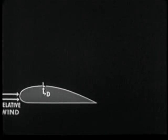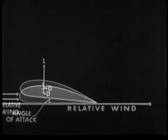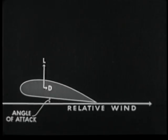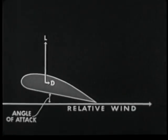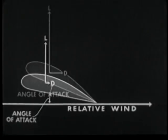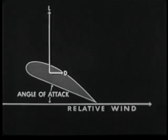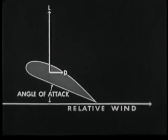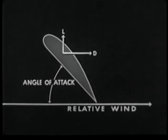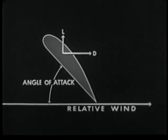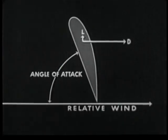Wind tunnel tests show how lift and drag vary with the angle of attack of an airfoil. In general, as the angle of attack increases, lift and drag increase up to a point where lift decreases abruptly and drag becomes the principal component. This is known as the stalling angle. From this angle to 90 degrees, drag continues to increase while lift falls off.